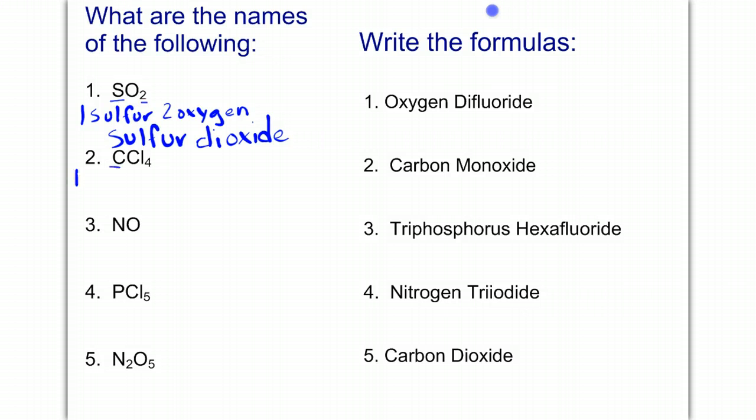In number two, we have one carbon, and we have four chlorine. So that's going to be called carbon tetrachloride.